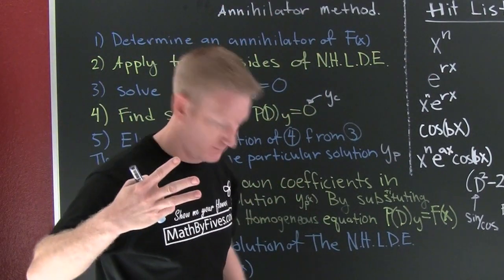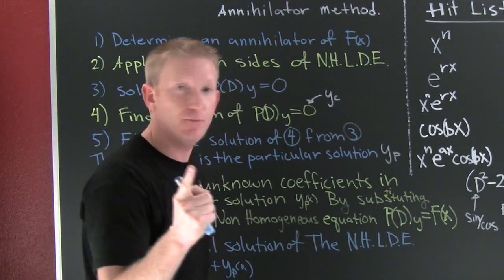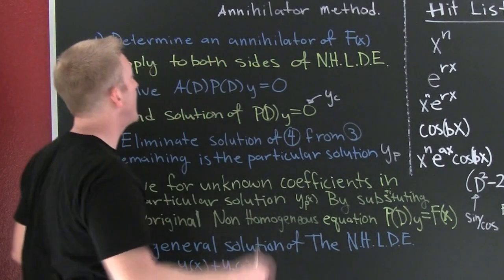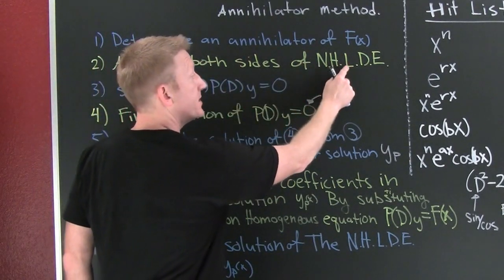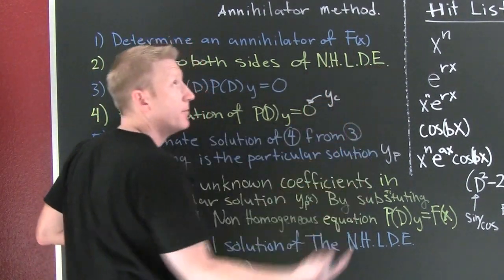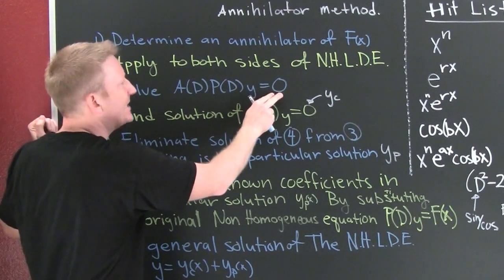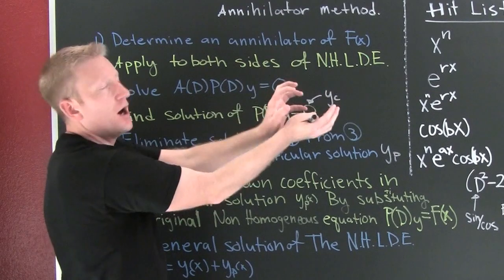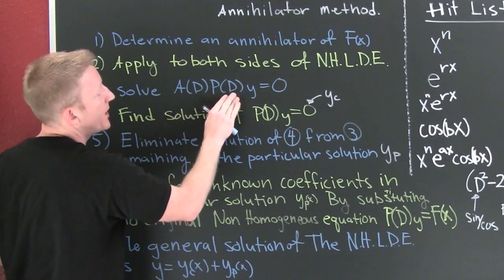The annihilator method has a seven-step process and it's not short. Step one: determine the annihilator. Step two: apply that annihilator to both sides of the non-homogeneous linear differential equation. When we annihilate the right-hand side, it gets rid of the non-y part to make it zero — to make it homogeneous.